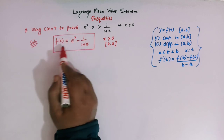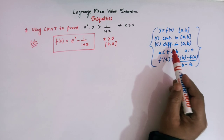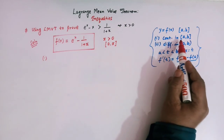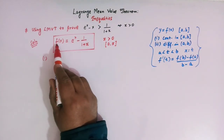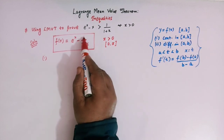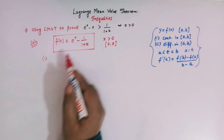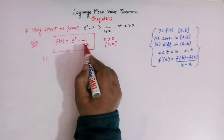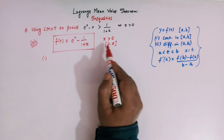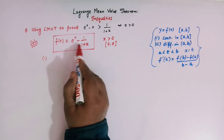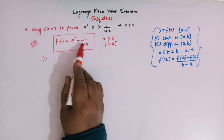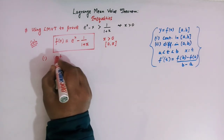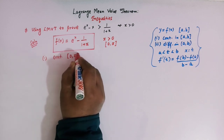Let us first see whether this function satisfies the conditions of Lagrange's mean value theorem. The first condition is that this function must be continuous in the interval. f(x) is a combination of the exponential function e^x and the rational function 1/(1+x). Both e^x and 1/(1+x) are continuous in this interval, and f(x) is their sum, so f(x) is continuous in [0, x].